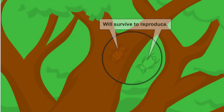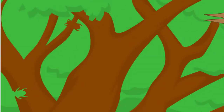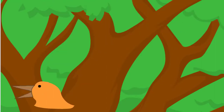Beetles that tend to stay in an area of the tree in which they can't be seen tend to survive and are able to reproduce. As time goes on, the offspring of the beetles that survived tend to exhibit the same behaviors and characteristics of their parents.